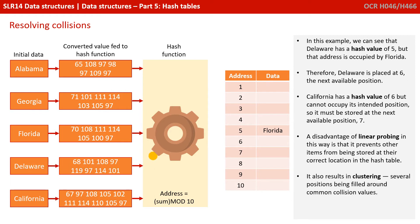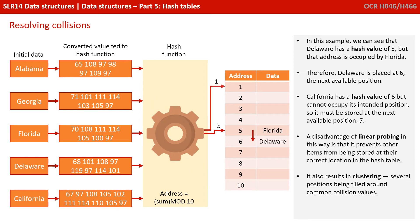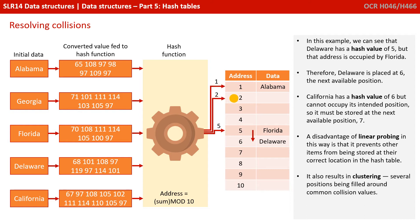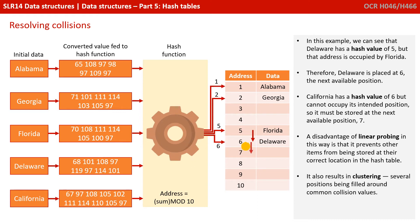In this example, we can see that Delaware has a hash value of 5, but that address is already occupied by Florida. Therefore, Delaware is placed at 6, the next available position. When we get to California, we discover it has a hash value of 6, but again cannot occupy its intended position, so it must be stored in the next available position, 7. A disadvantage of linear probing is that it prevents other items from being stored in their correct location in the hash table. It can also result in what is known as clustering — several positions being filled around common collision values.